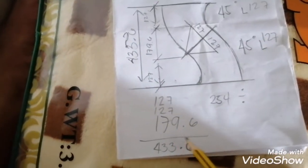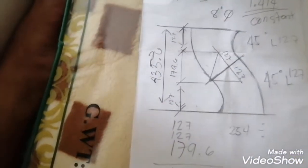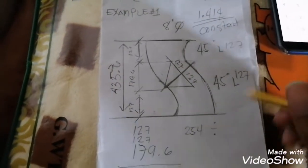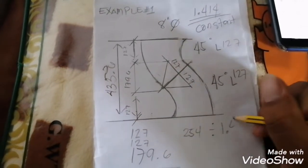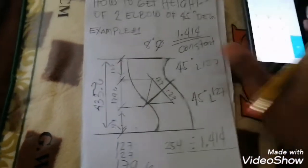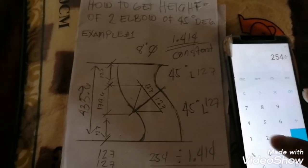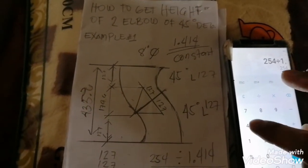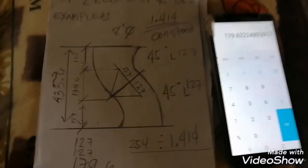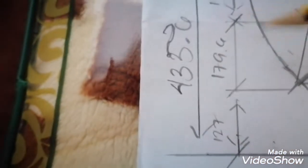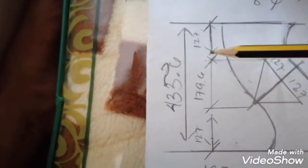The answer is 433.3 using 1.414. This is example one. 254 divided by 1.414, the answer is 179.6. And this is 179.6 for the center, center of two elbows.